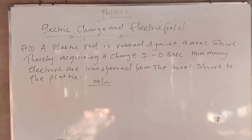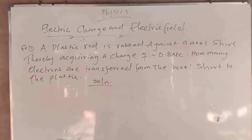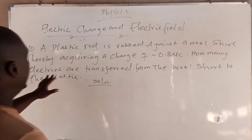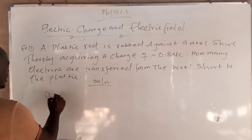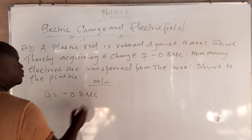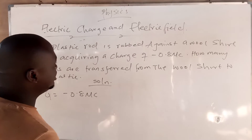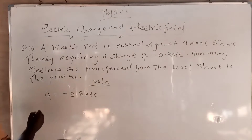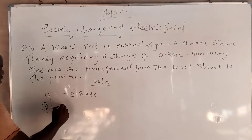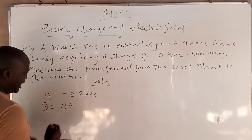Let's look at an example. A plastic rod is rubbed against wool. They are acquiring a charge of minus 0.8 microcoulombs. How many electrons are transferred from the wool to the plastic? Remember the formula: the charge equals the number of electrons times the charge of an electron.